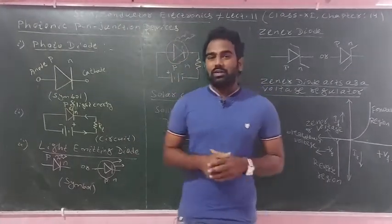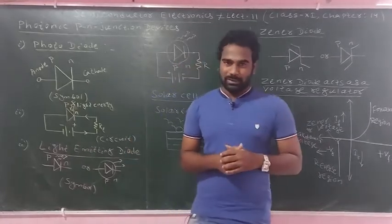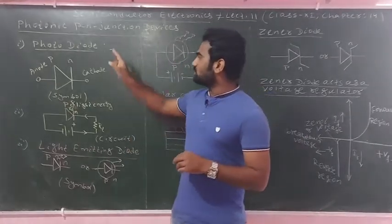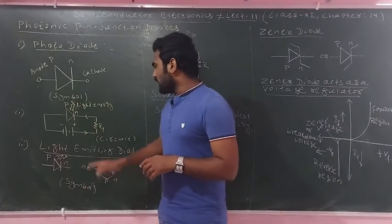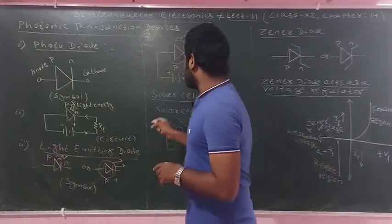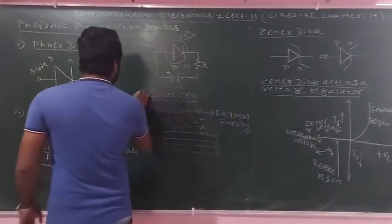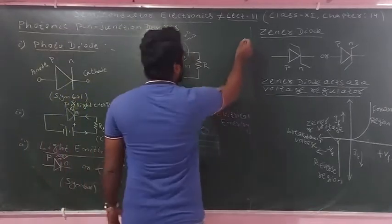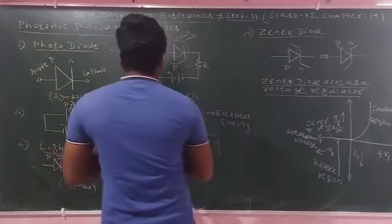There are basically four photonic p-n junction devices. One is the photocell, the second one is the light emitting diode, the third one is the solar cell, and the fourth one is the Zener diode.